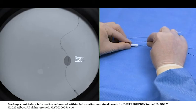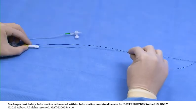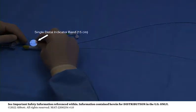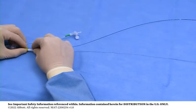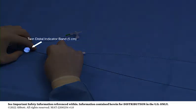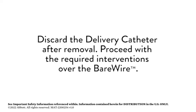Maintain bare wire position and remove the delivery catheter. Notice the single distal indicator band is positioned 15 cm from the Rapid Exchange exit port, and the twin distal indicator bands are located 5 cm from the Rapid Exchange exit port to aid catheter retrieval. Open the hemostasis valve after the twin distal indicator bands become visible. Discard the delivery catheter after removal. Proceed with the required interventions over the bare wire.